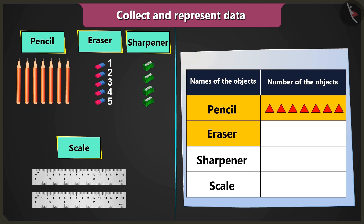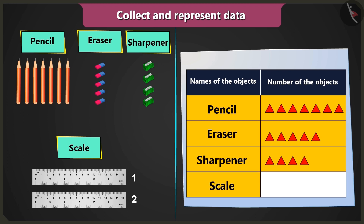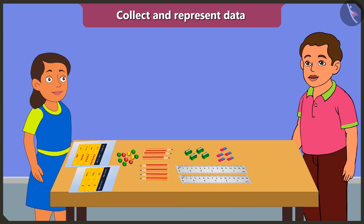I have five erasers, so I have to draw five triangles. I have four sharpeners, so I have to draw four triangles. And I have two scales, so I have to draw two triangles. Absolutely right. Well done, Bubbly! Oh wow, it is very interesting.